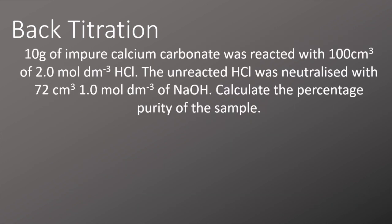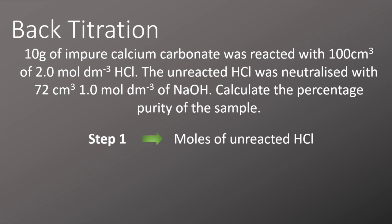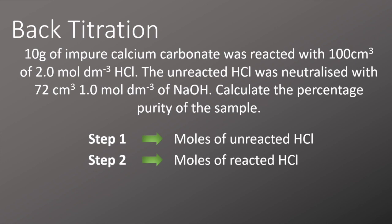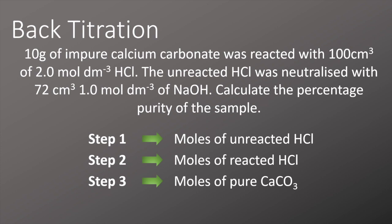So if we consider this example of a back titration where 10 grams of impure calcium carbonate was reacted with an excess of hydrochloric acid, and that unreacted hydrochloric acid was then neutralized with sodium hydroxide, we're asked to calculate the percentage purity of the sample. We can break it down into four steps: Step 1 — calculate moles of unreacted HCl using the titration data. Step 2 — calculate moles of reacted HCl from starting moles minus remaining moles. Step 3 — calculate moles of pure calcium carbonate using reaction stoichiometry. Step 4 — calculate the percentage purity.